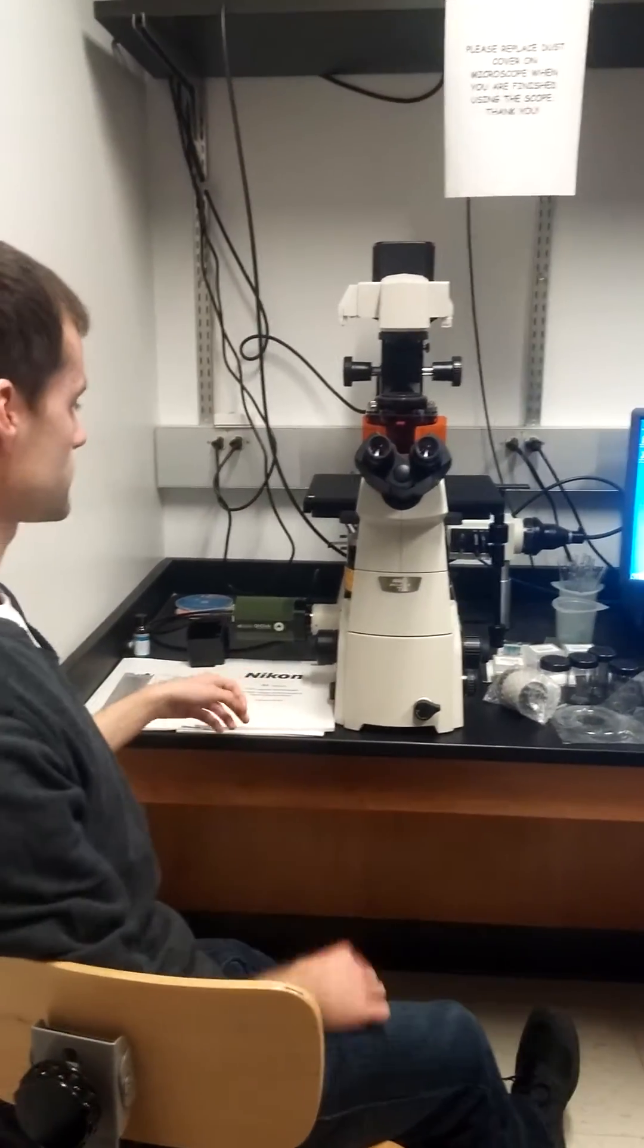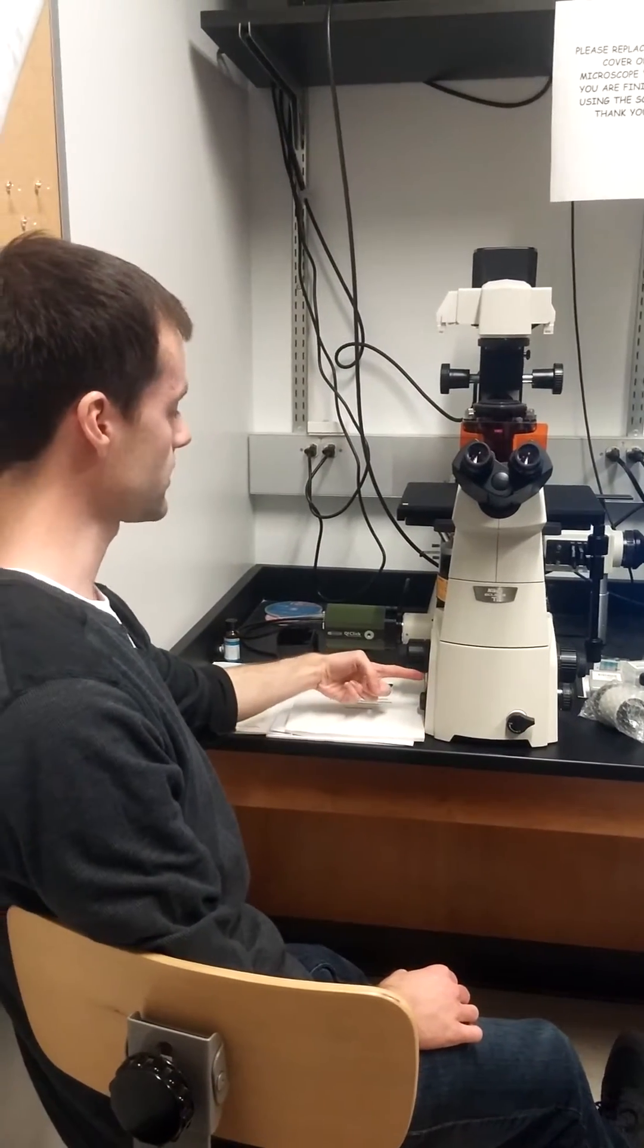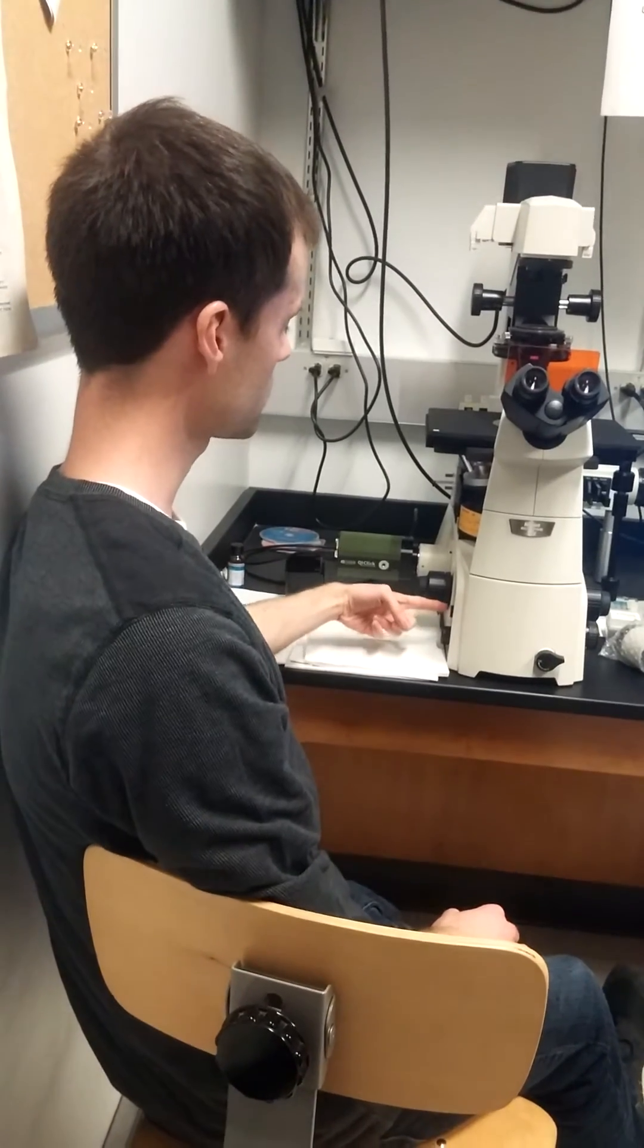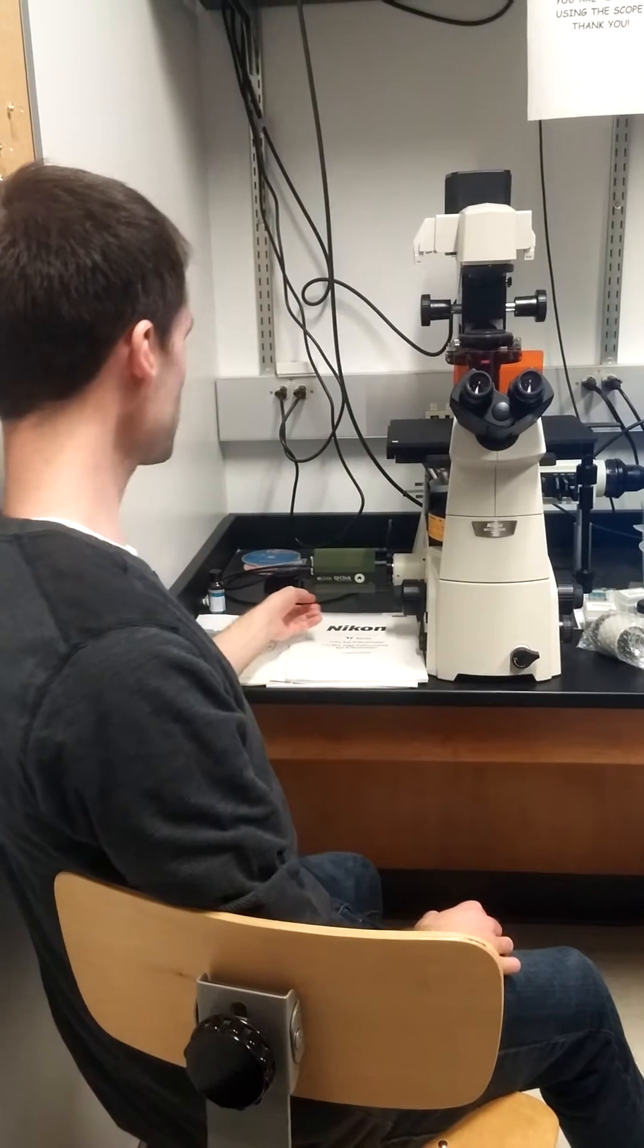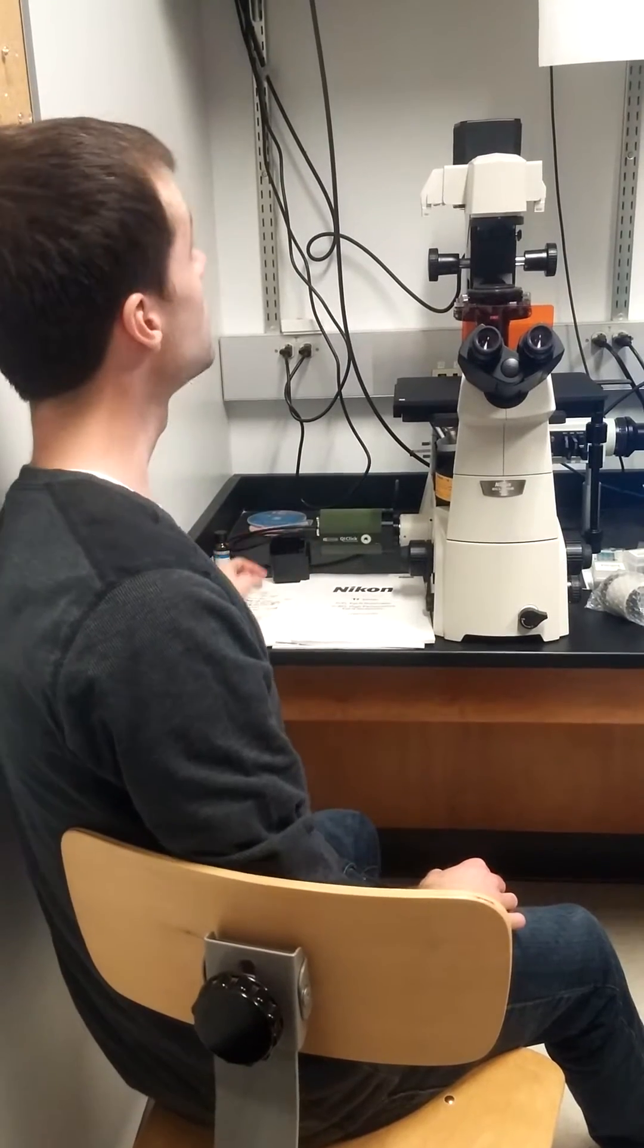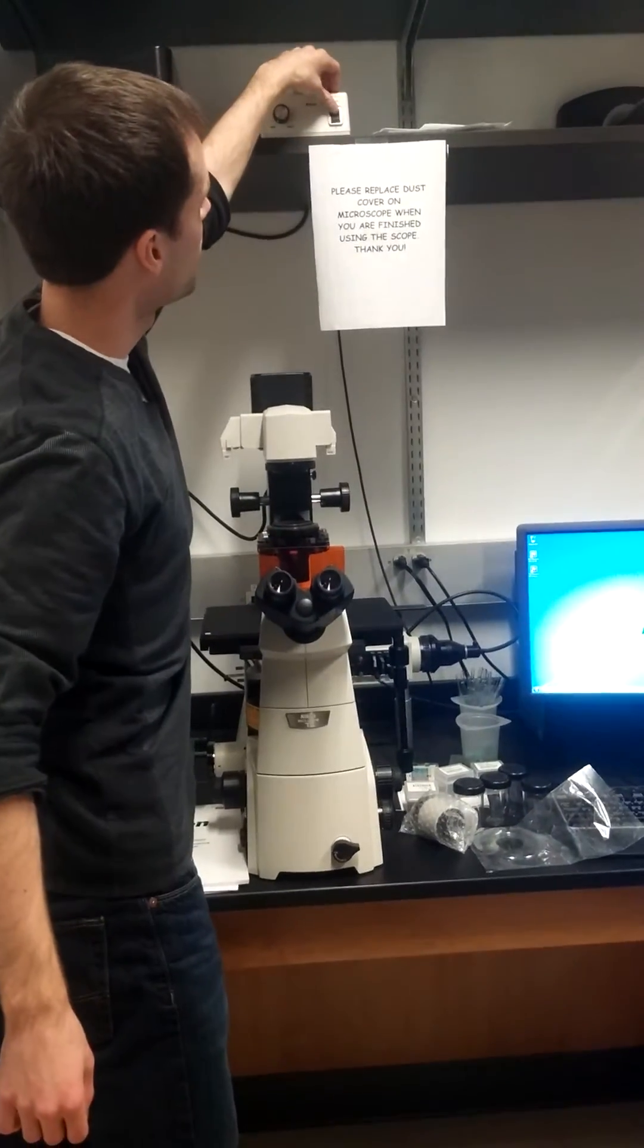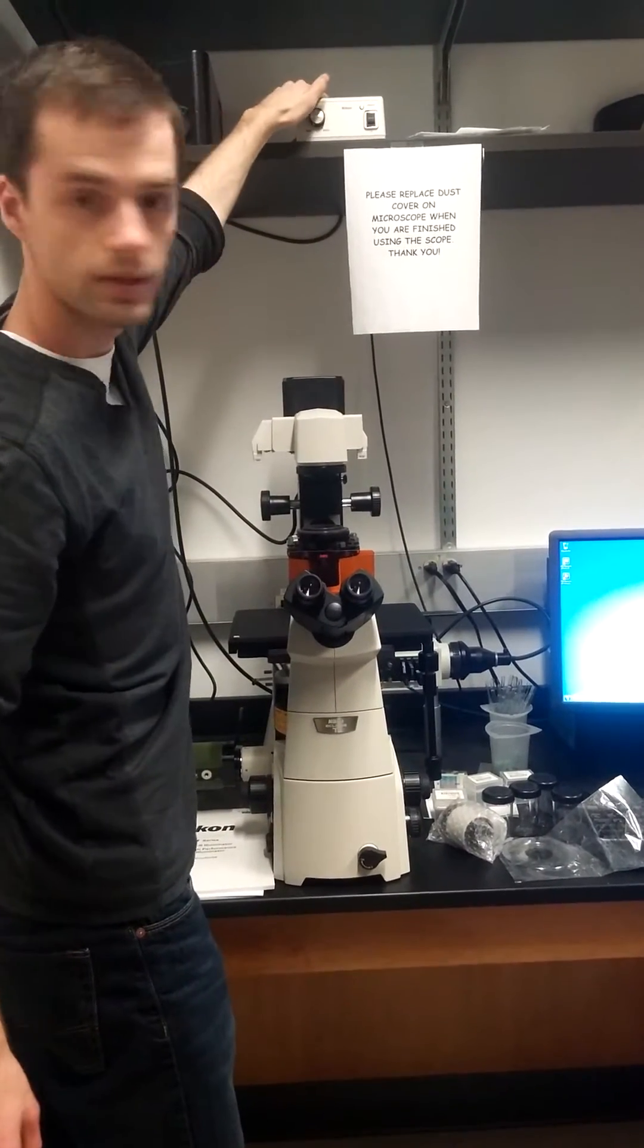Next thing is to start up the microscope by hitting the power button located on the left-hand side here. It's just a little white button. Push that in. Next we'll turn on the camera which is located on the left-hand side and it's just a switch that we're going to press down. And third, last power button for a while, is this power supply to the microscope which controls the lighting.